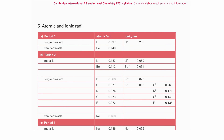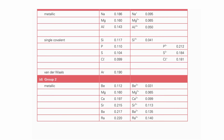Since the ionic radius of Group 2 ions affects the trend of solubility of Group 2 hydroxides and sulfates, questions may ask us to quote values of ionic radius of Group 2 metal ions. We can find atomic and ionic radii from the data booklet. For Group 2, there is a page showing the atomic radius and ionic radius of Group 2 elements and metal ions, and we can see the trend increases down the group.